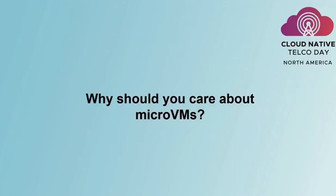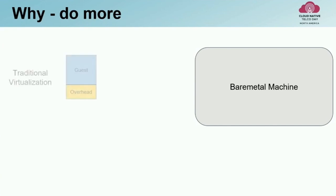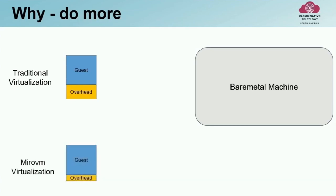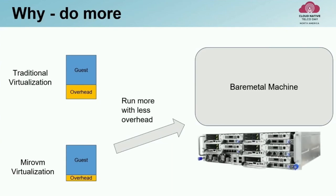Why should you care about micro VMs? Fundamentally, it allows you to do more with the same resources. With a bare metal machine, there are resources required for the guest plus an overhead per VM. With a micro VM implementation, the guest requirements are the same but the overhead is less — so you can run more on that machine. At the edge and far edge where the amount of compute is limited, this really makes a difference.